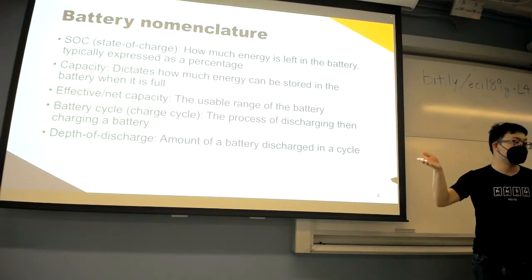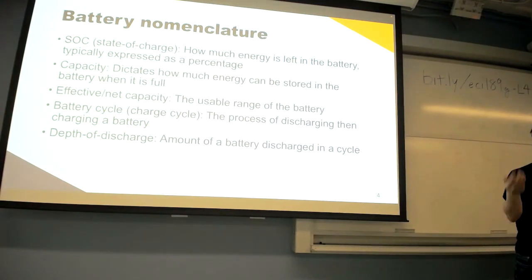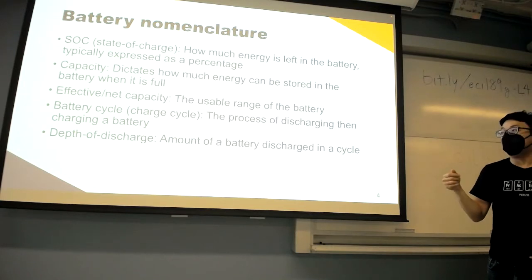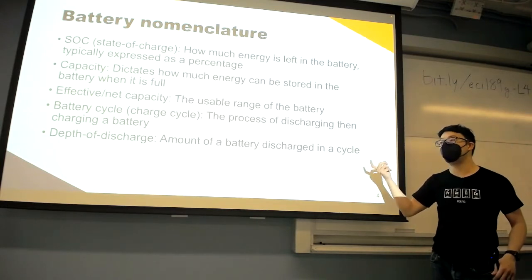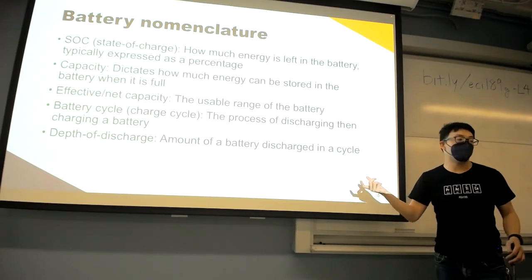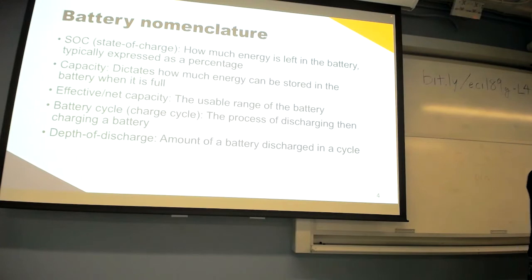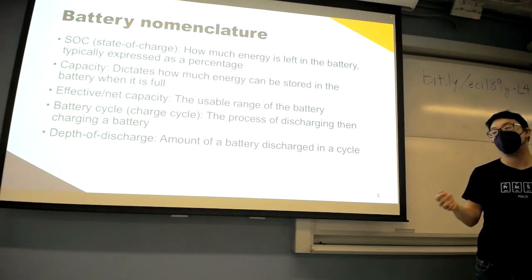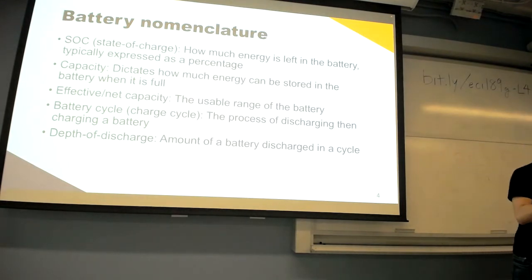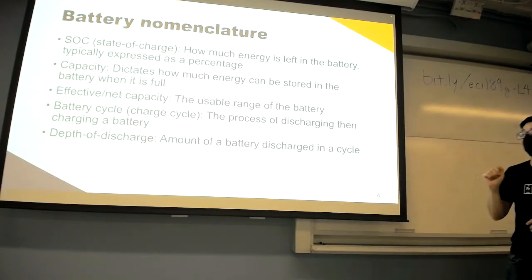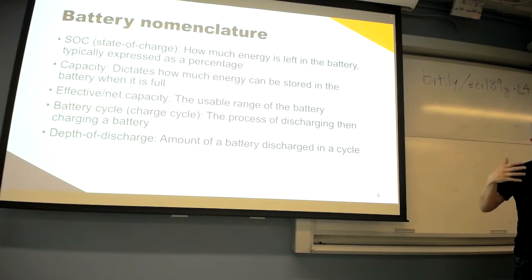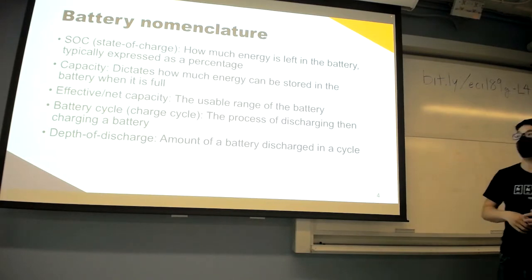Capacity dictates how much energy can be stored in the battery when it's full. The units of energy we're talking about are kilowatt hours for a full battery used in an electric vehicle, but for something like a phone or laptop it could be in watt hours. The unit for capacity is energy, and the size of the battery is dictated by how much energy it can store.